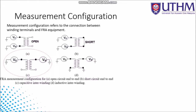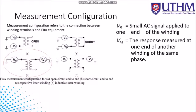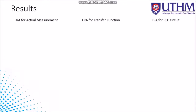The measurement configuration refers to the connection between winding terminals and FRA equipment. There are four measurement connections: open, short, capacitive, and inductive interwinding. In this study, we use capacitive interwinding. The measurement involves injecting a small AC signal to one end of a winding and measuring the response at one end of another winding of the same phase. This test configuration checks the response due to the influence of the space between the windings in the particular phase.